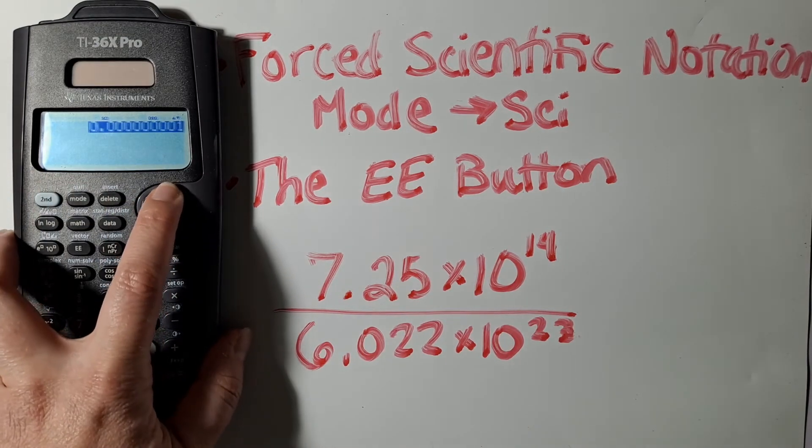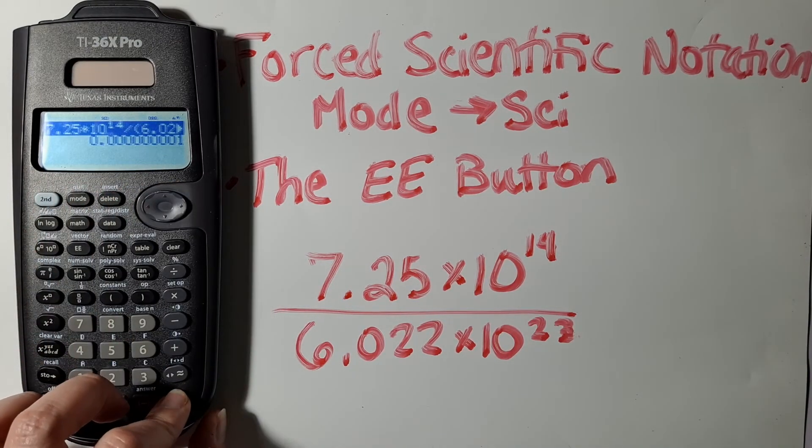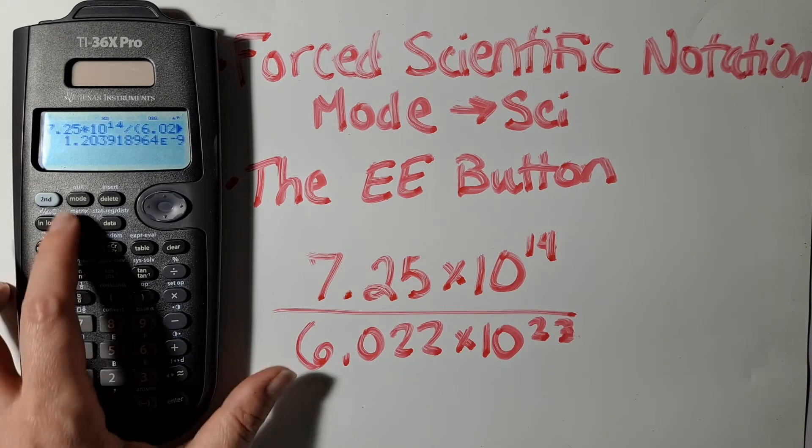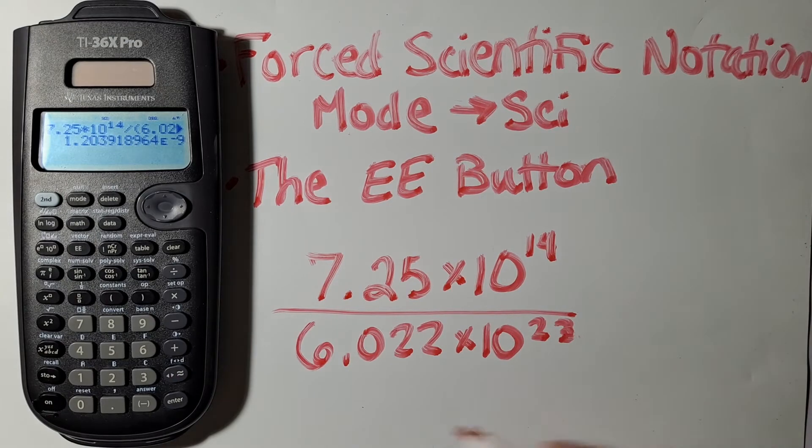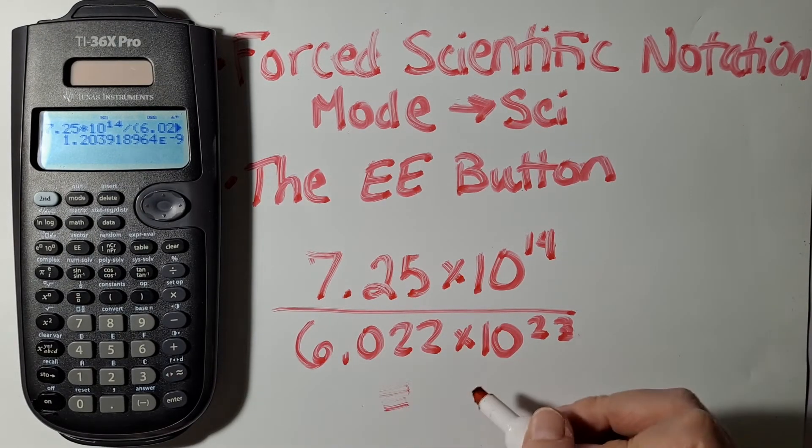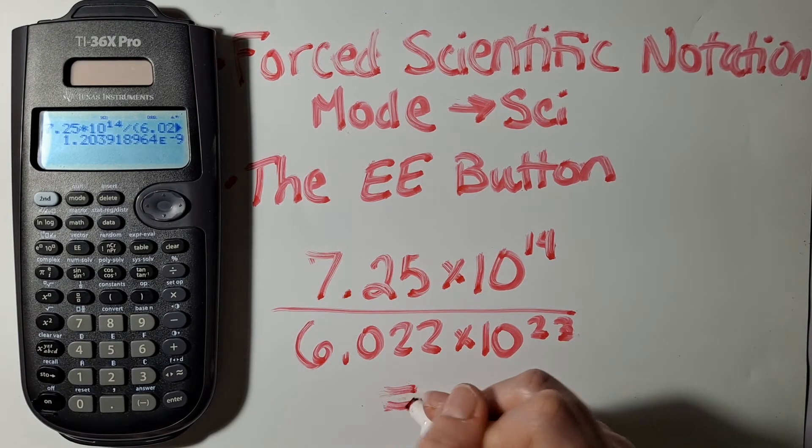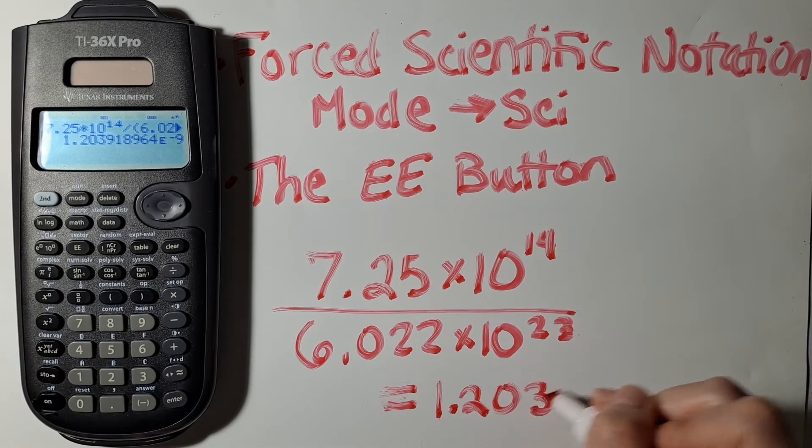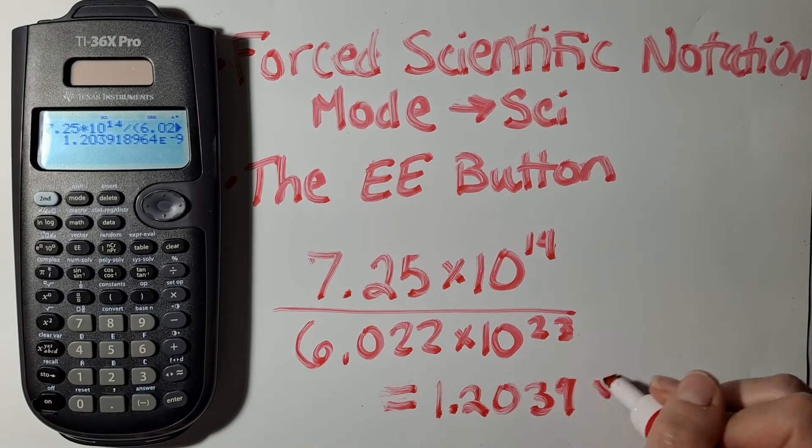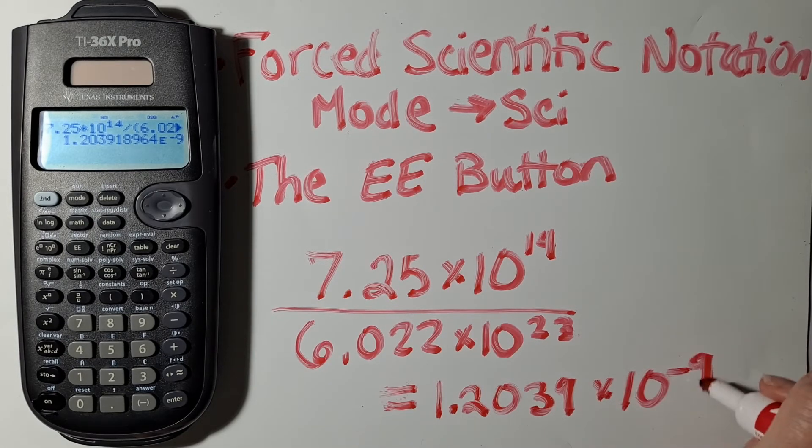Now if I scroll up again, I can grab that calculation again, and then hit enter, and now it recalculates, and I can see all of the digits that I intended to have in there. And so that is equal to 1.2039 times 10 to the minus 9th power.